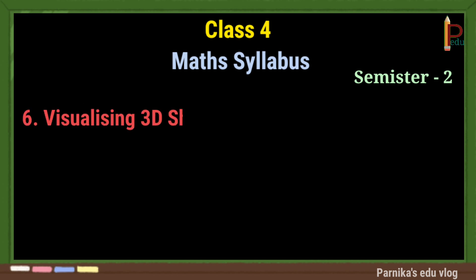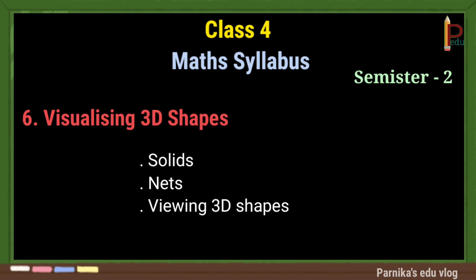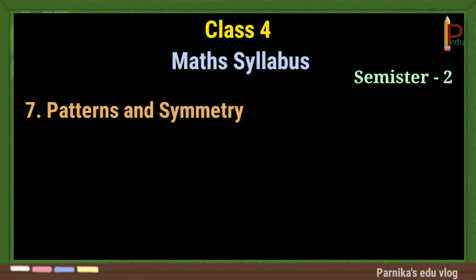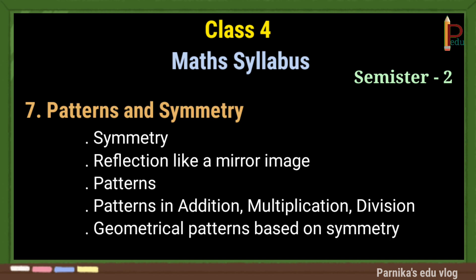The sixth chapter is Visualizing 3D Shapes. It contains solids, nets, and viewing 3D shapes. The seventh chapter is Patterns and Symmetry. In this chapter, we will learn more about symmetry and patterns.